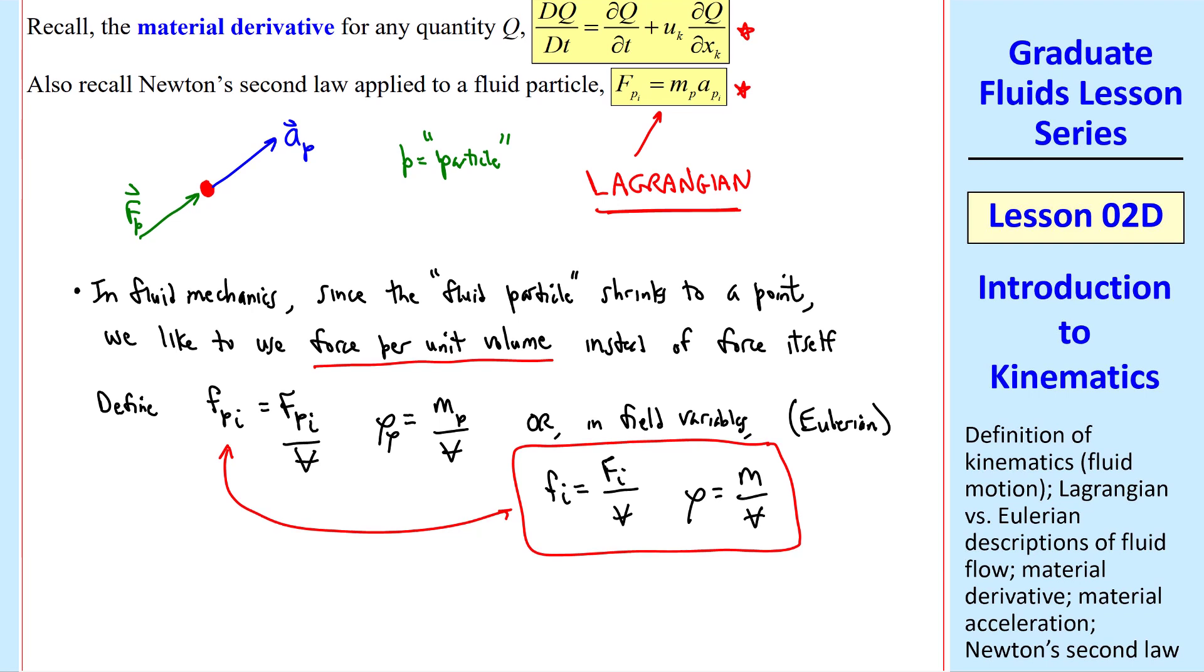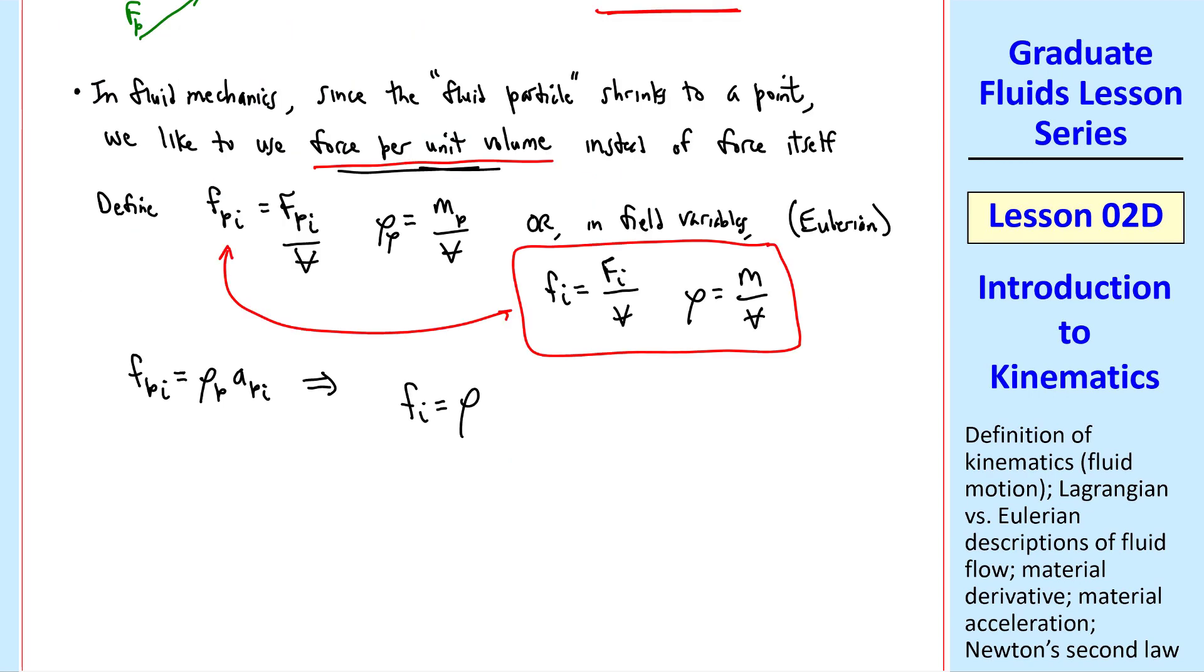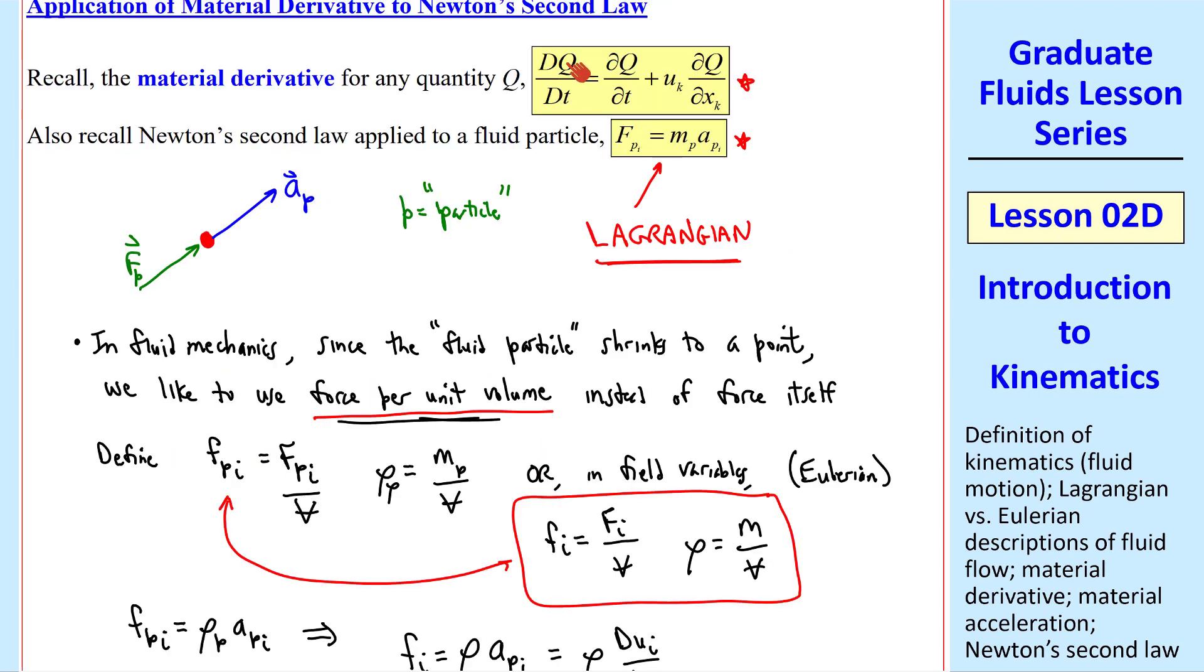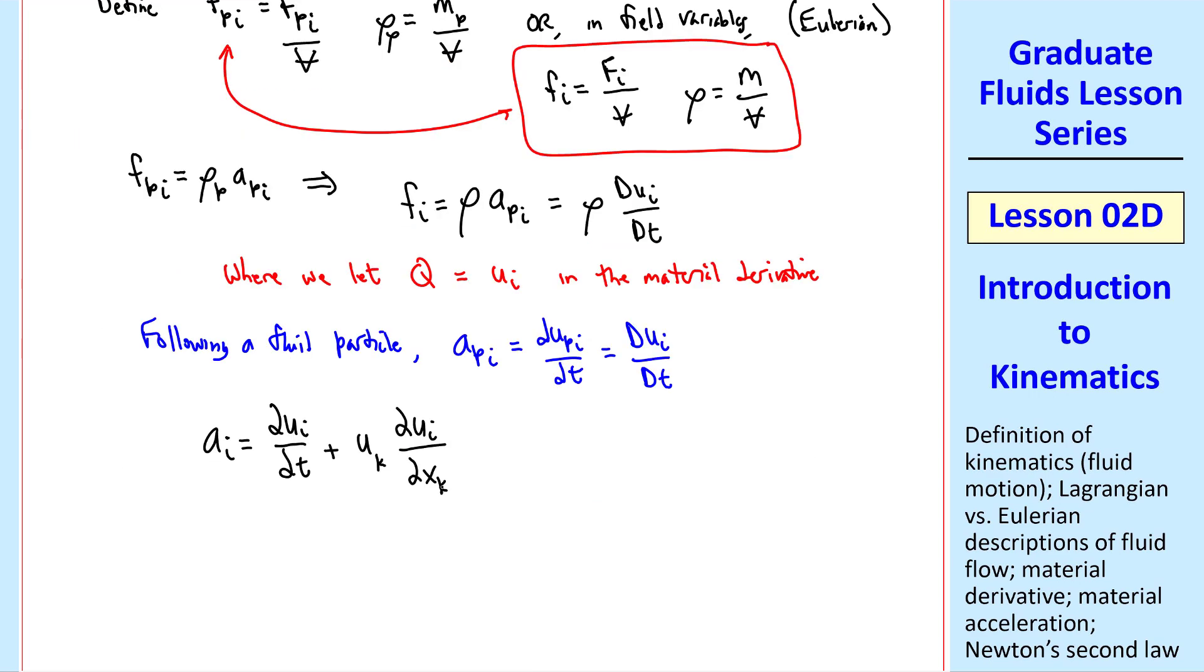So the Lagrangian form of Newton's second law on a per volume basis is fpi equal rho p api. But since these two are the same as we just discussed, we can write this as fi equal rho api, which is rho dui dt, where we let our variable q be ui. Following a fluid particle then, the acceleration of the fluid particle is dupi dt equal dui dt. We get that directly by letting q equal ui in the material derivative. So we can write ai equal del ui del t plus uk del ui del xk.